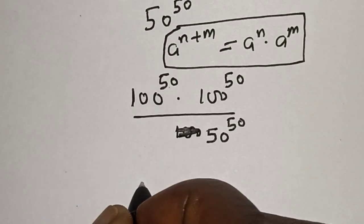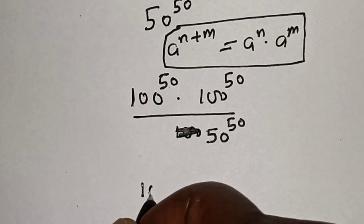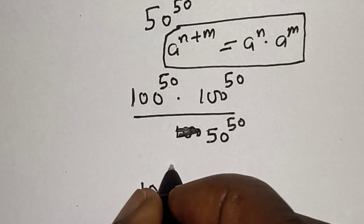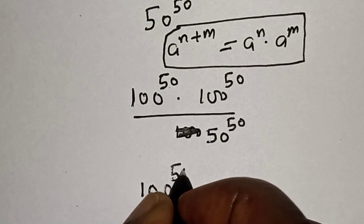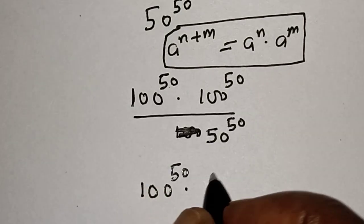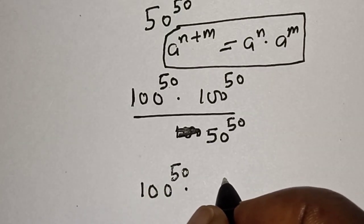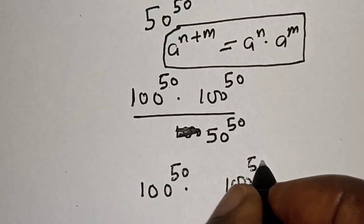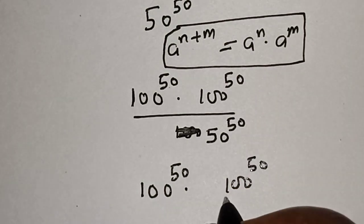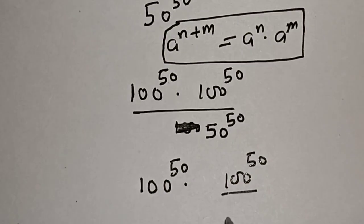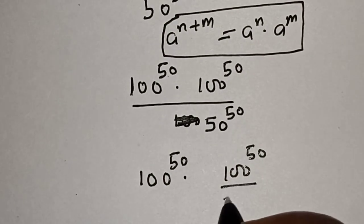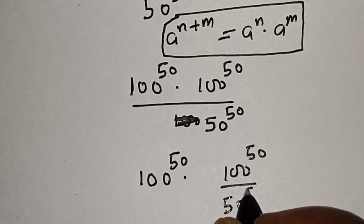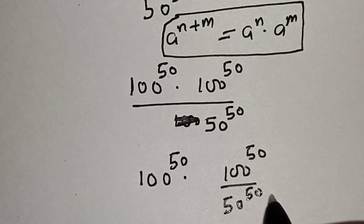Now, this is 100 to the power of 50 multiplied by 100 to the power of 50 divided by 50 to the power of 50.